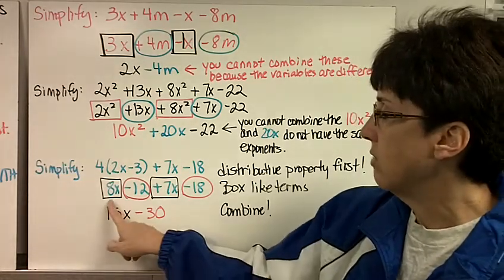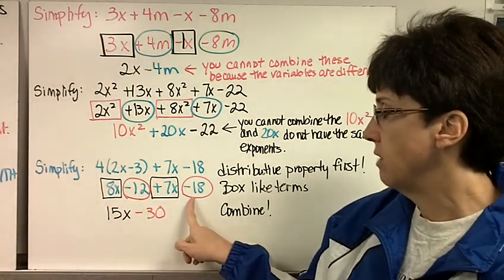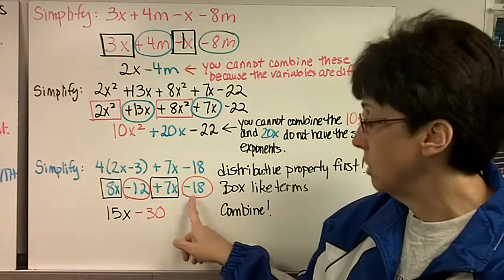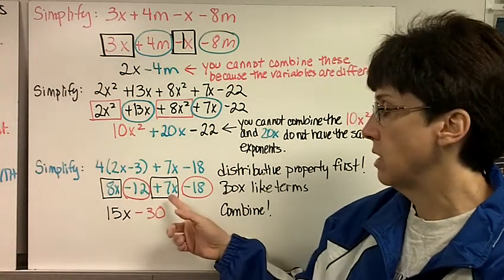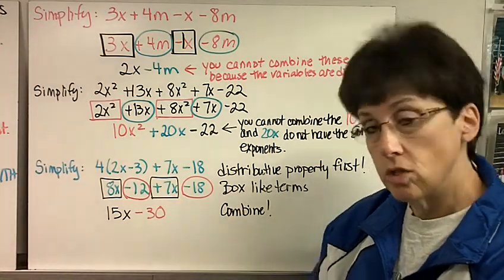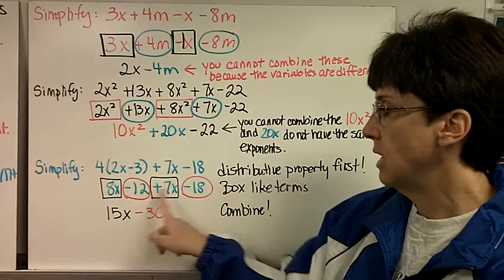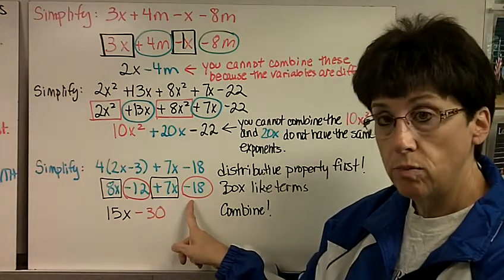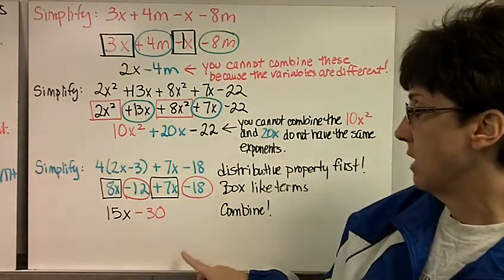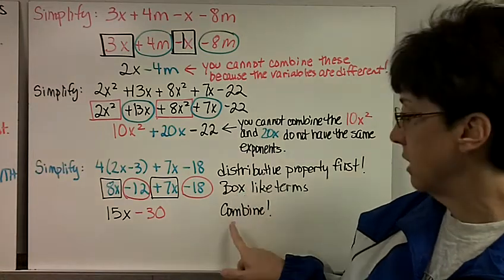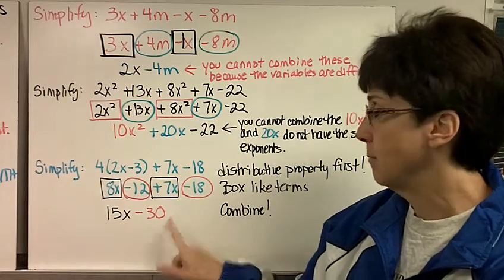So now I look and I see I have an 8x and a positive 7x, so I'm going to box them, and a negative 12 and a negative 18. Now you don't need to use different colors. I'm doing that so you can see it better, but I sometimes use circles and squares, and sometimes if I have more, I use triangles, just so they'll stand out to me. So 8x plus 7x is 15x. Negative 12 and negative 18, they're both negatives, or if we think about it, they're both bad guys, so we have a lot of bad guys. Negative 30. And that's it. I did the distributive property, I boxed my like terms, and I combined. And these cannot be combined because 30 does not have an x. That's it.